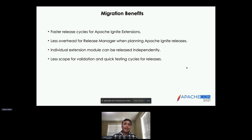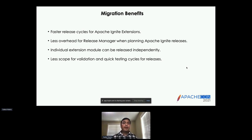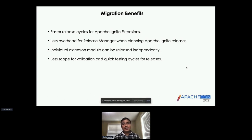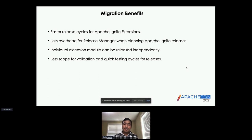Some of the benefits: we can expect a much faster release cycle for each of those Apache Ignite extensions. We will have much less overhead for the release manager when planning Apache Ignite releases, because the extensions can be released separately with a much smaller scope. Individual extension modules — Kafka, Flink, and all other extensions — can be released independently, which also helps us get a much smaller scope for validation and a much quicker testing cycle for releases.